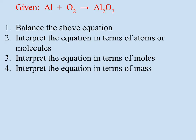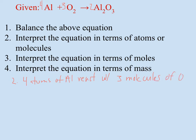If we advance to the next sheet and write it out — four, three, two — interpret the equation in terms of atoms or molecules: four atoms of aluminum, that plus sign means reacts with, three molecules of oxygen, to produce two molecules of aluminum oxide, Al2O3.